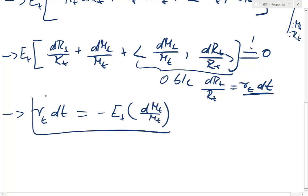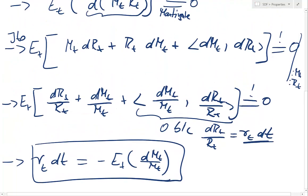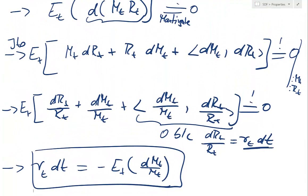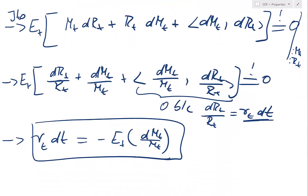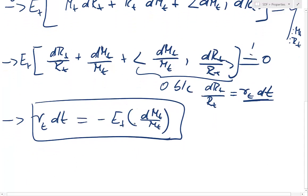The expectation of dr over r is just rₜ dt, and that goes to the other side. So that has to equal minus dmₜ divided by mₜ. That is property 1. Therefore property 1 is really just the result of the defining characteristic of an SDF — namely that mₜ times the money market account needs to be a martingale — and based on that restriction the SDF is restricted such that its conditional growth rate is minus the risk-free rate.